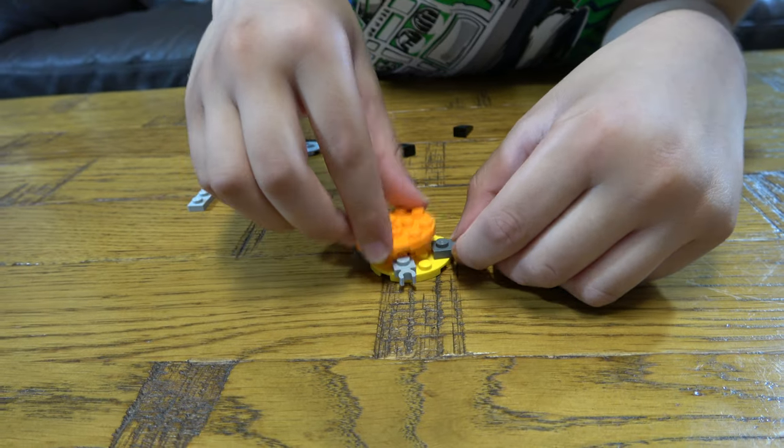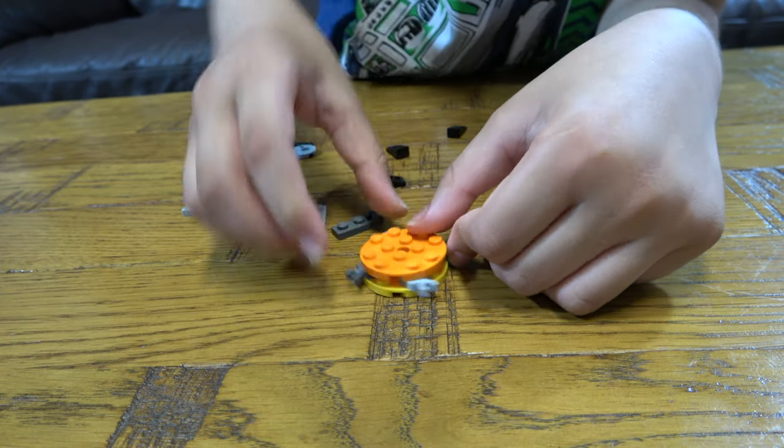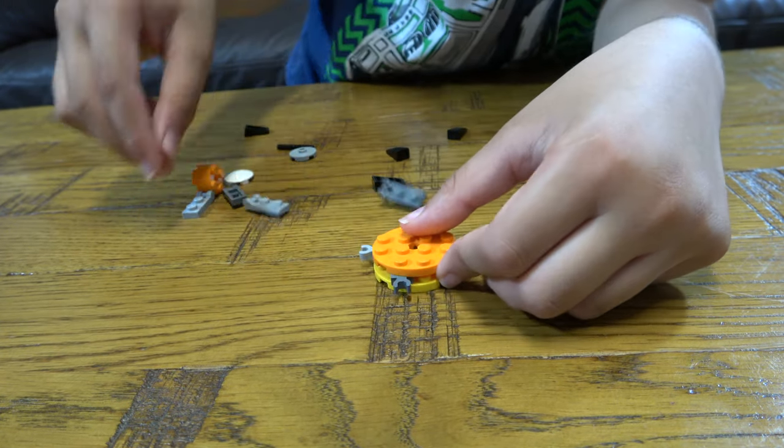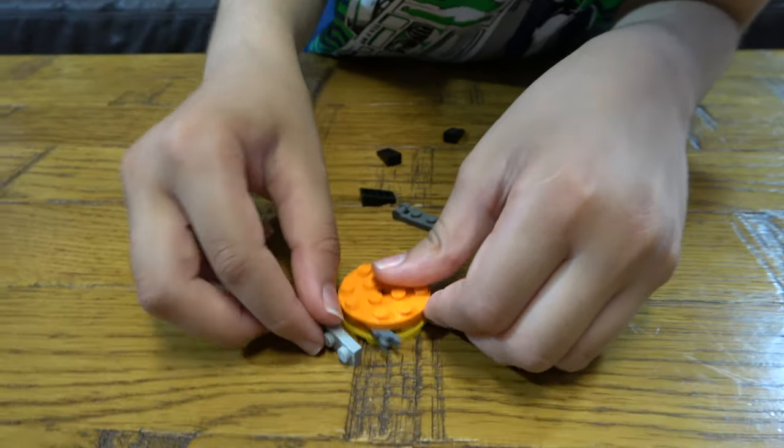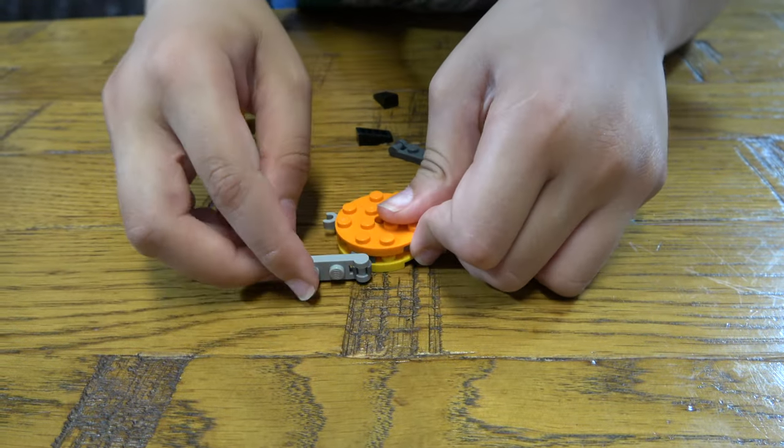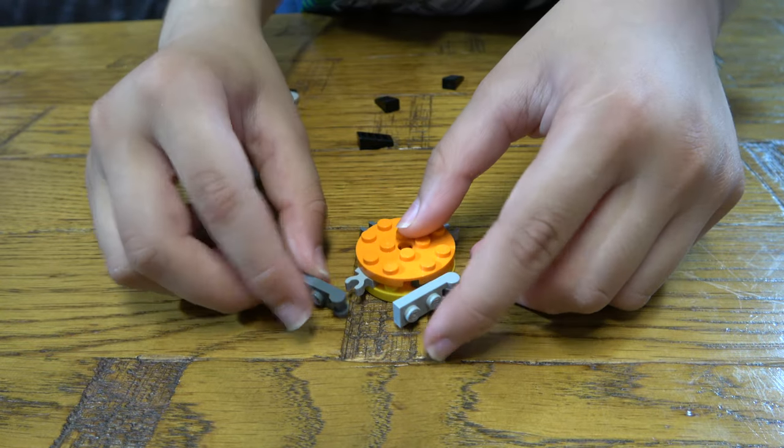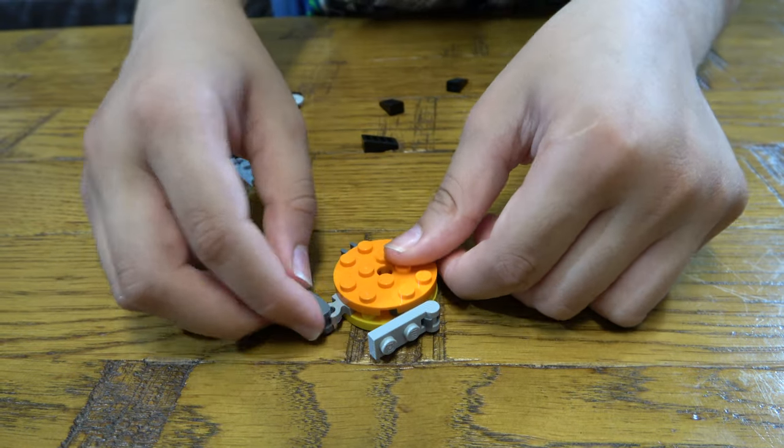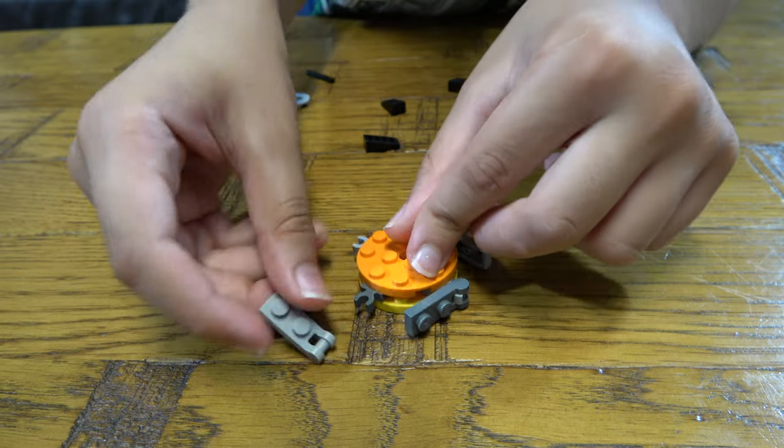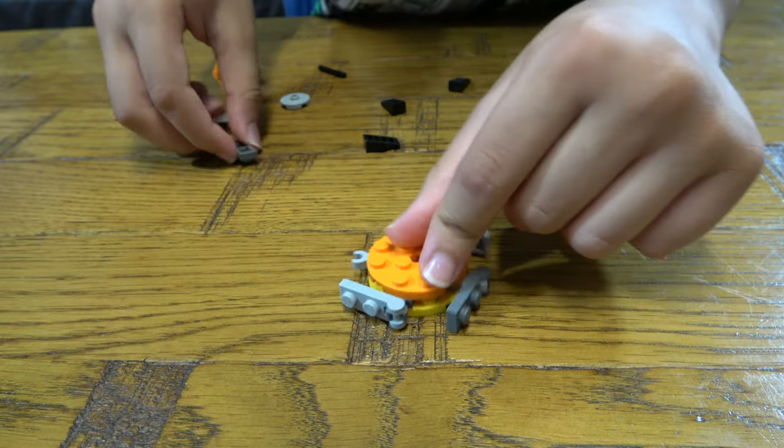Then we're going to place this on, like that. And we're going to place this onto the dark grey clip. The dark one on the light one, and we're going to do that for the rest. Like that.